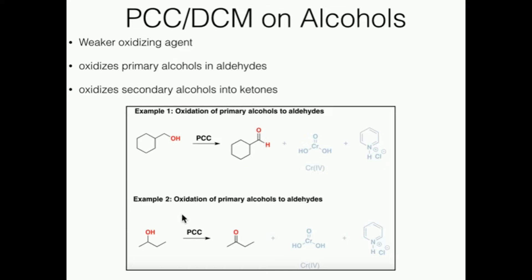What else can these weaker oxidizing agents do? We have here another alcohol. Is it primary, secondary, or tertiary? This carbon right here is attached to two carbon atoms, so this is a secondary alcohol. PCC or these weak oxidants do the same thing: oxidize the C-O single bond into a C-O double bond. Notice that when we ran PCC on the primary alcohol we got an aldehyde, but when we run PCC on a secondary alcohol, because of the nature of the attached carbons, this is not an aldehyde — this is a ketone.